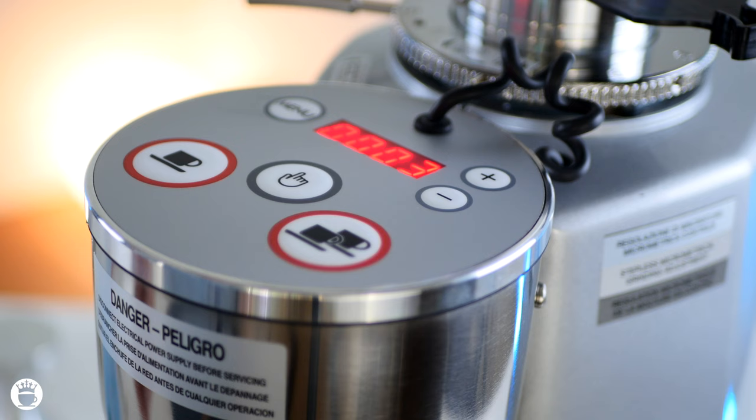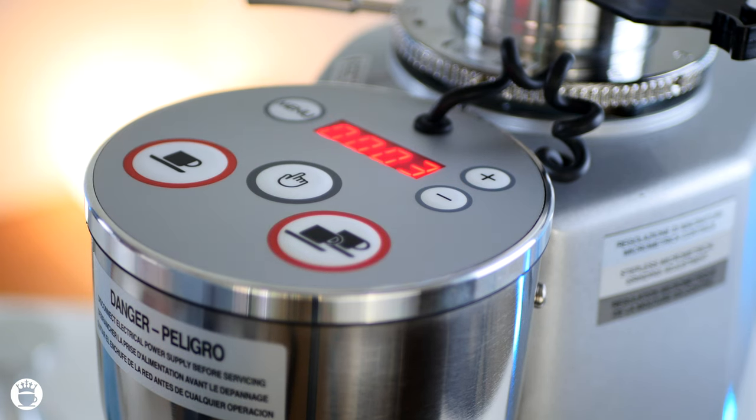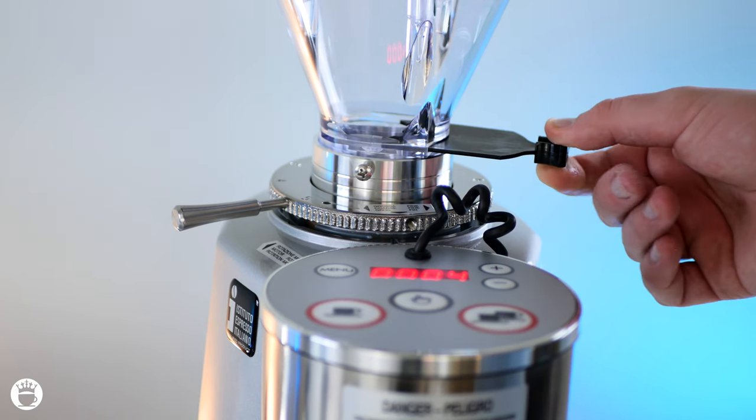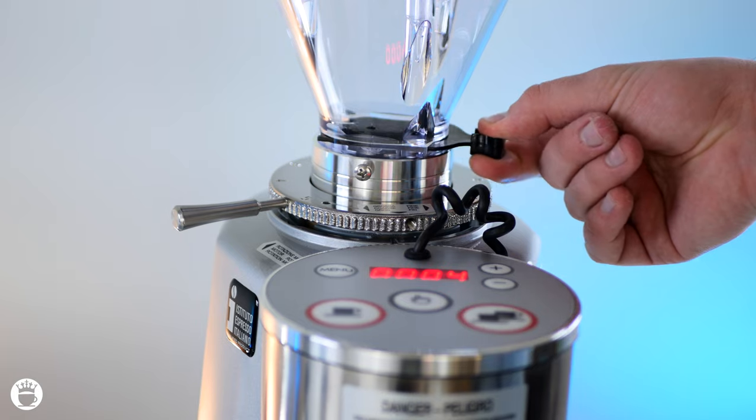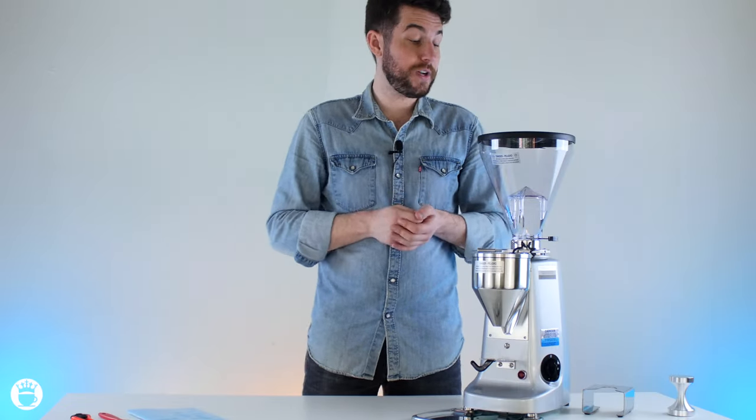There's also a really nice, very bright digital timer up here that will show you all of your menu options, shot timers, etc. So up top here near that hopper, we do have an adjustable chute here that goes in and out to allow you to remove your hopper and clean it out or replace with a different espresso.